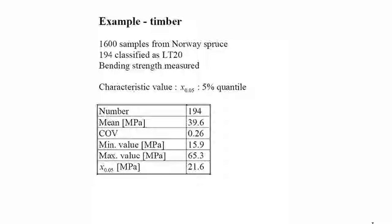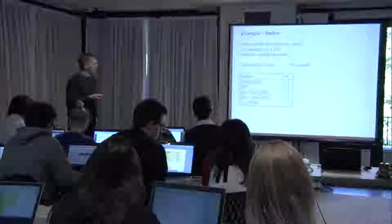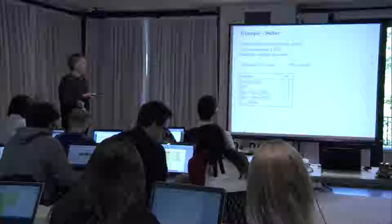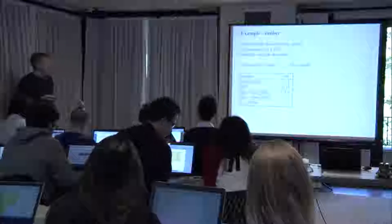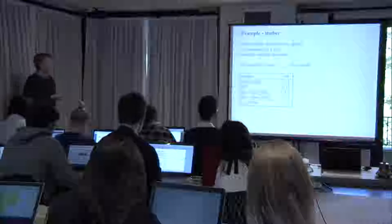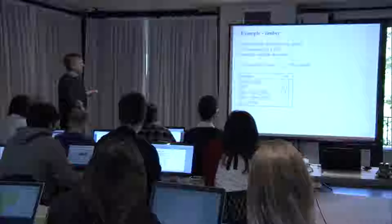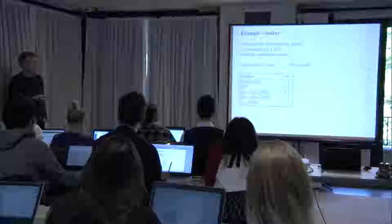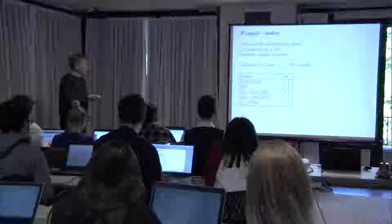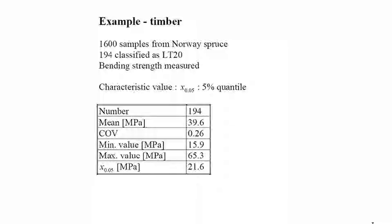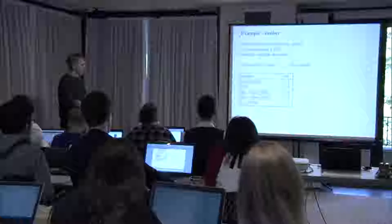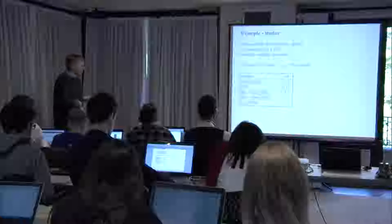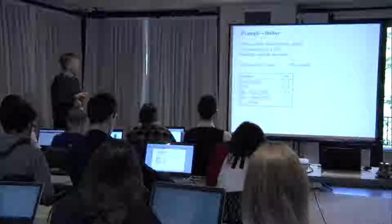An example illustrating how to model strengths stochastically is presented using timber data — specifically samples from Norway spruce categorized as strength class LT20. There are 194 data points. From the data, the mean value, coefficient of variation of 0.26, minimum value, maximum value, and the characteristic value — the 5% quantile — can be calculated. The 5% quantile from the data directly, without fitting a distribution, is 21.6.